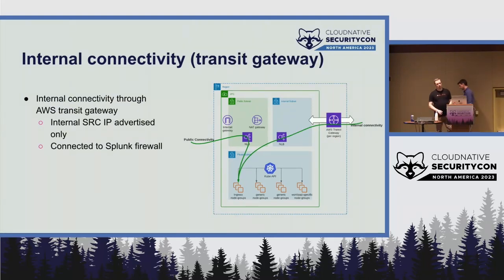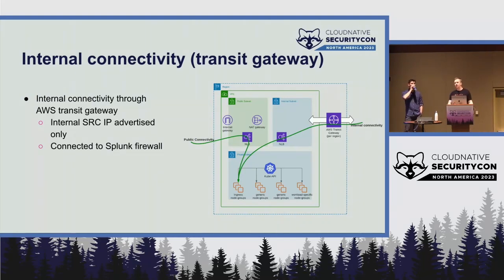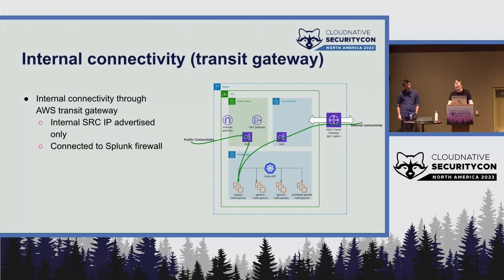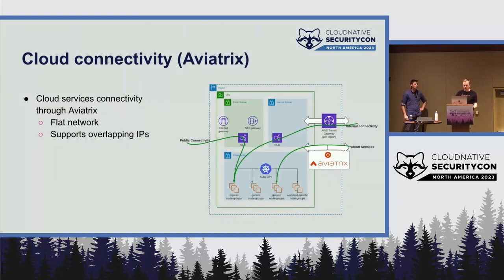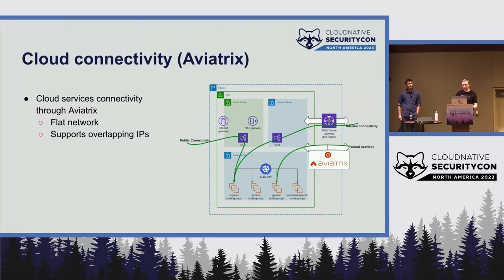For internal traffic, once you've hit an internal-subnet NLB, you still need to reach another cluster in another VPC. For that we use AWS transit gateways, which advertise only the internal subnet source IPs — private and public subnet IPs are not advertised. All traffic transits through the Splunk firewall where security rules can be applied. For shared services that every cluster needs to access without going through an NLB, Splunk uses Aviatrix, which provides a flat layer-3 network allowing all clusters to access those shared services directly from their private subnets via the Aviatrix transit gateway.